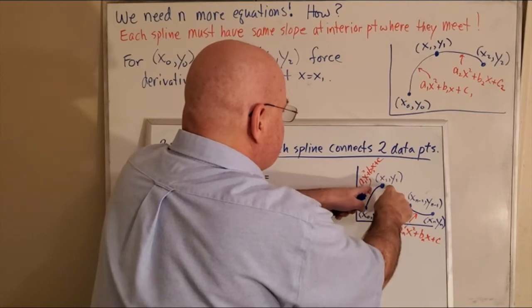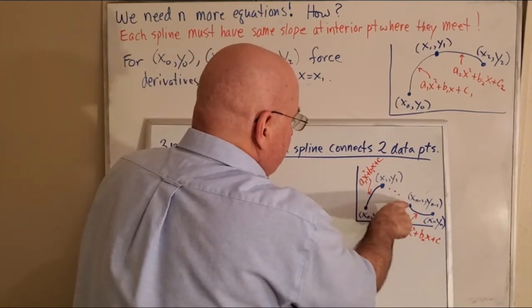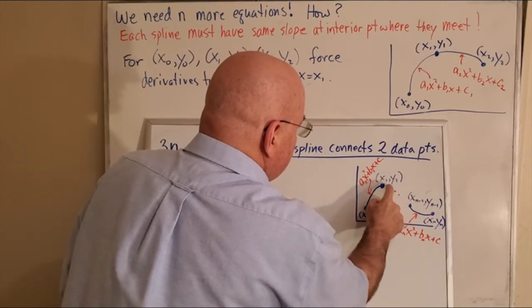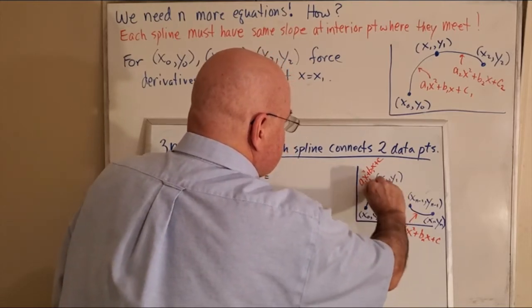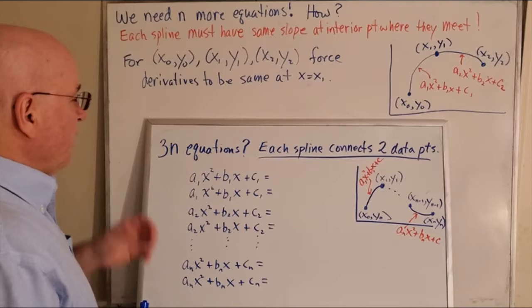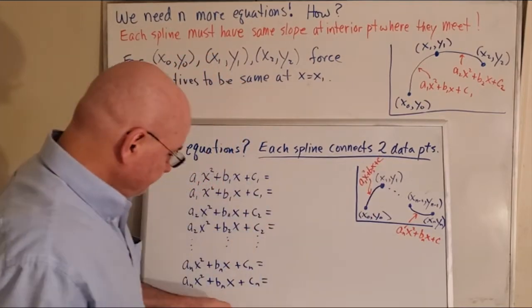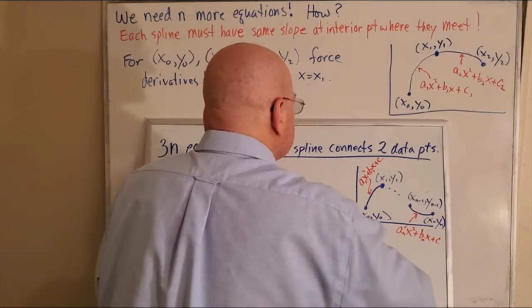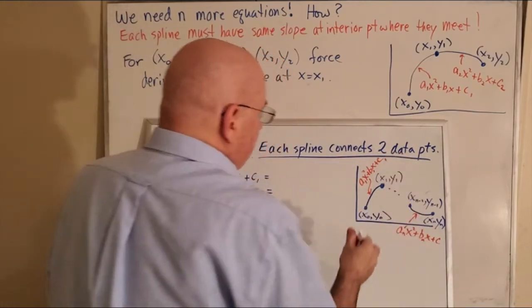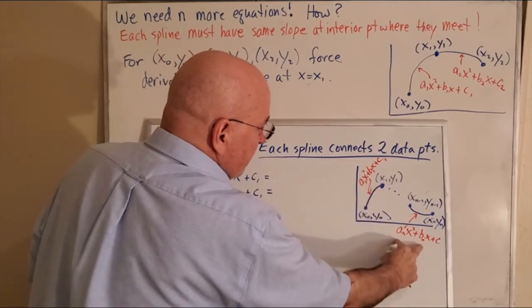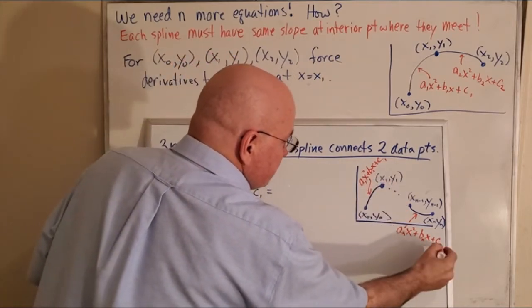The slopes are the same at each one of these internal knots, so here and here they meet and make it a nice smooth curve. So we have a1, b1, c1, a2, b2, c2 for the next one, and so on all the way up to an, bn, cn. That gives us 3n unknowns.